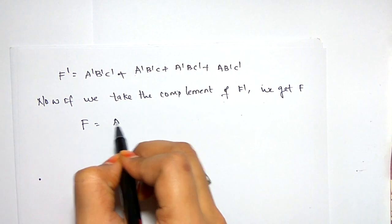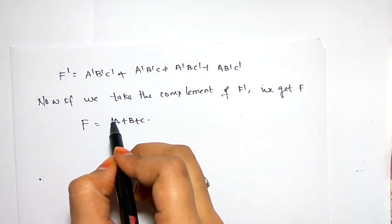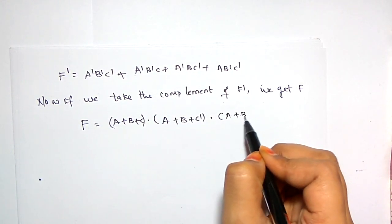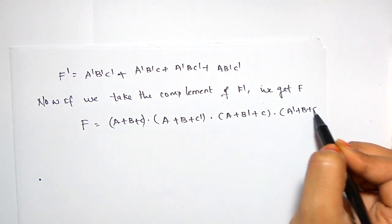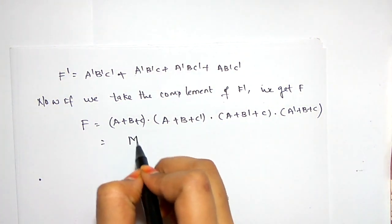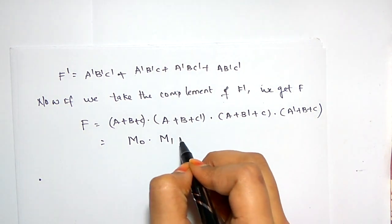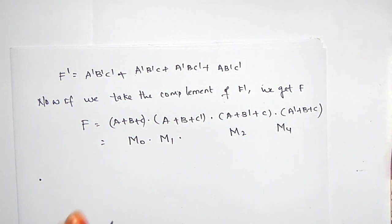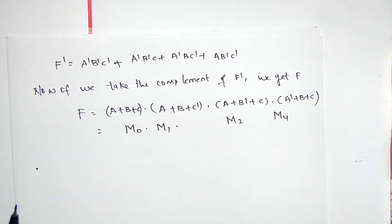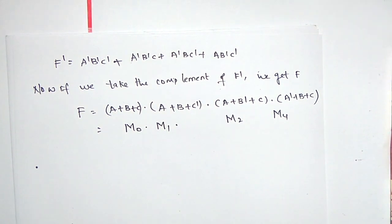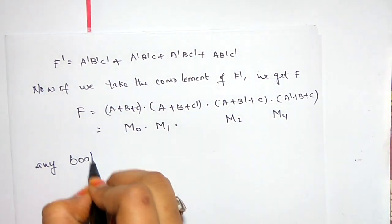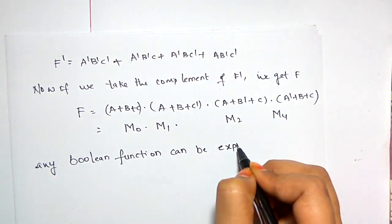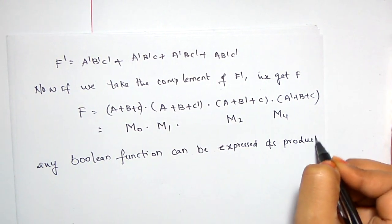Taking the complement: A̅B̅C̅ complemented becomes (A+B+C). The plus signs change to AND. Then (A+B+C̄), then (A+B̄+C), then (Ā+B+C). This can be written as M0 · M1 · M2 · M4. This demonstrates the second important property of Boolean algebra: any Boolean function can be expressed as a product of max terms.